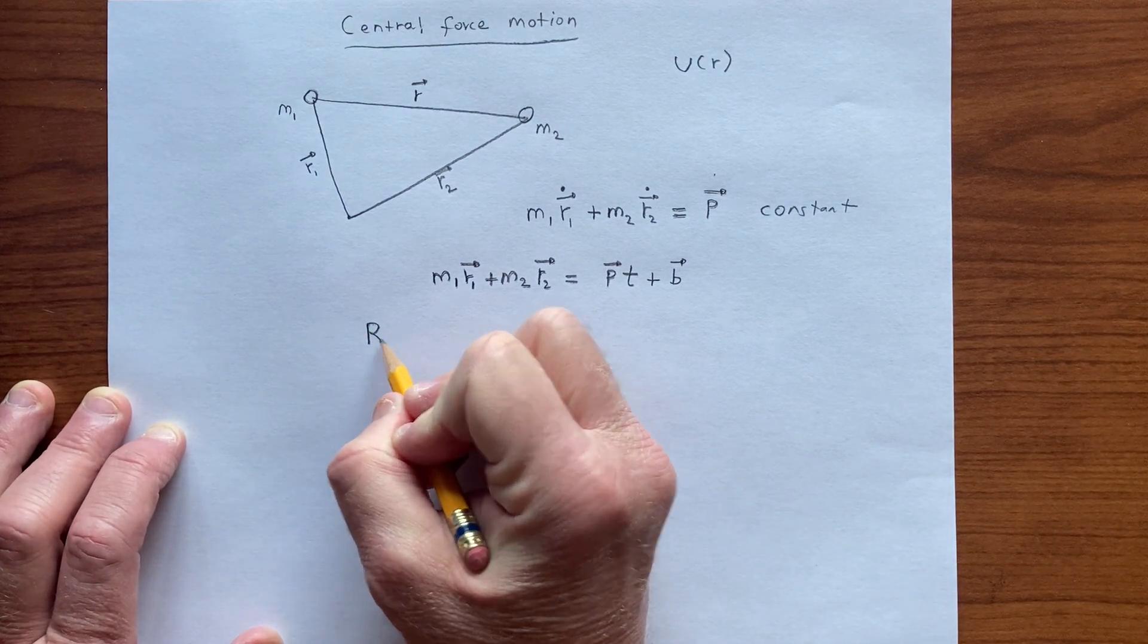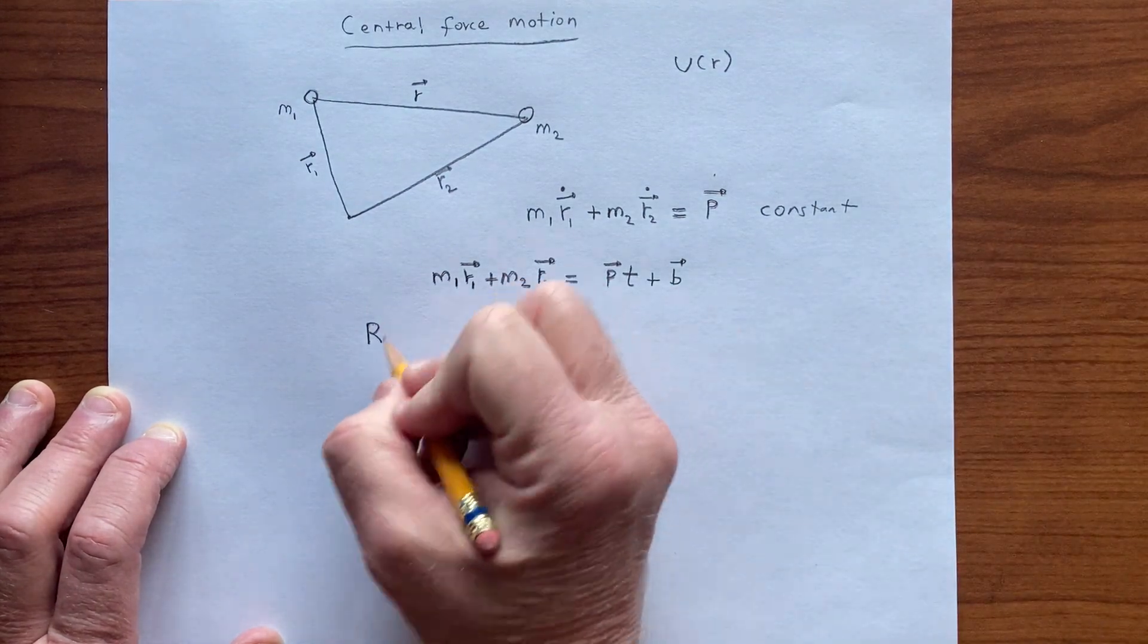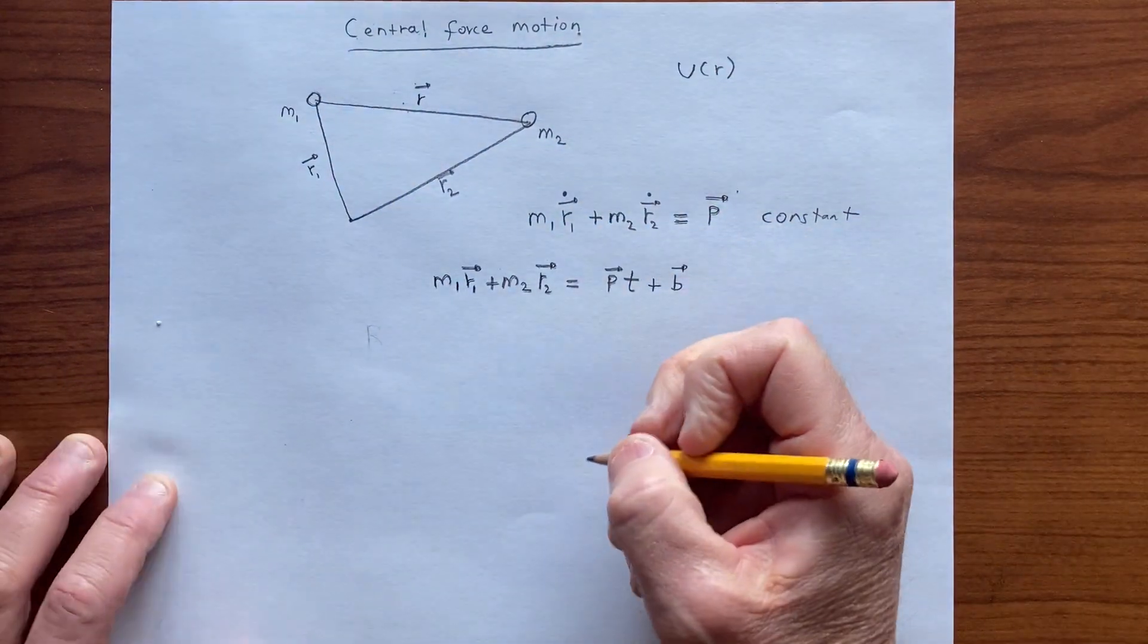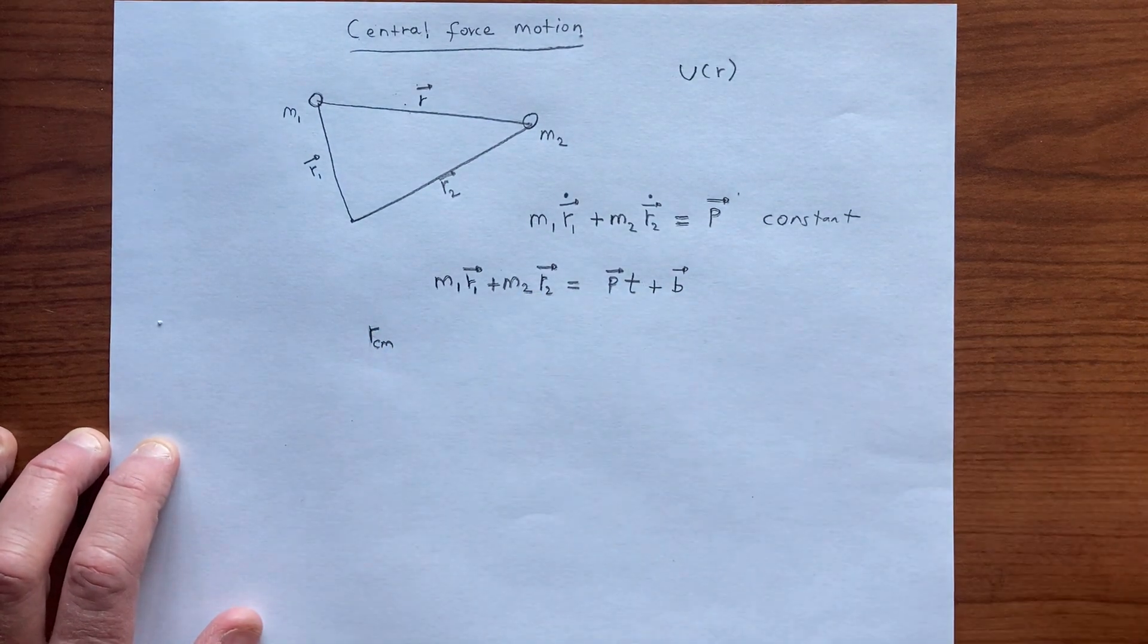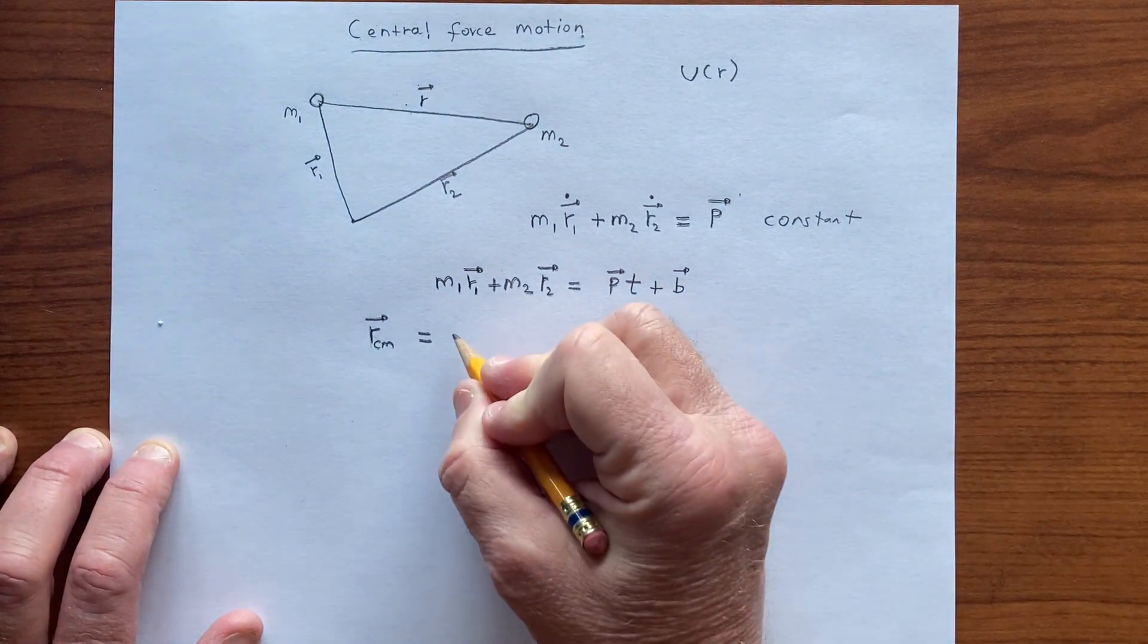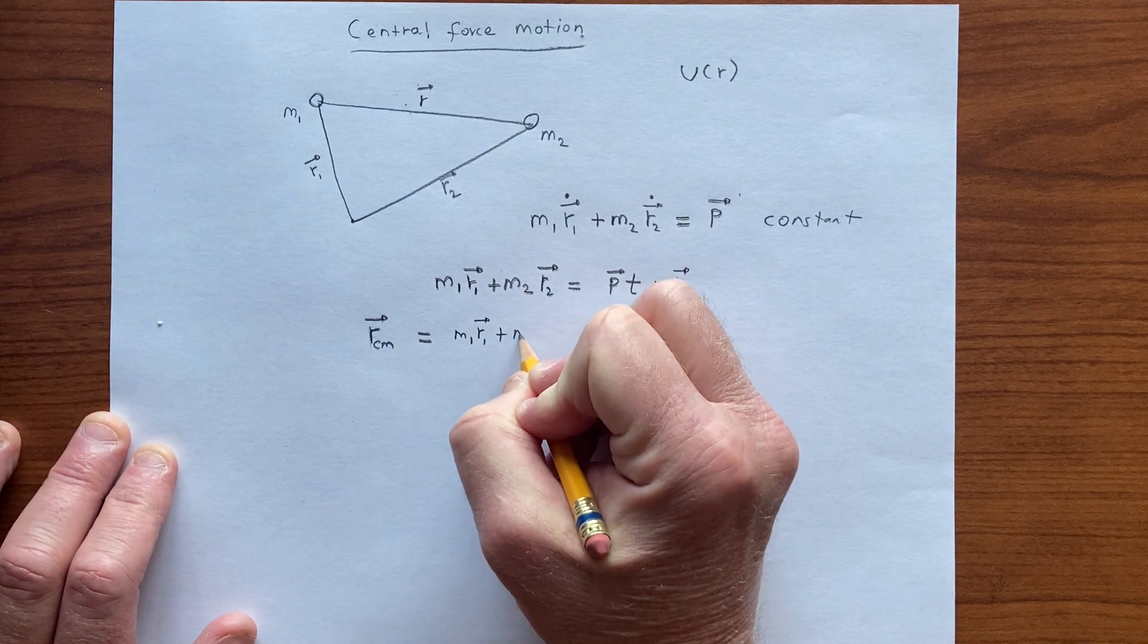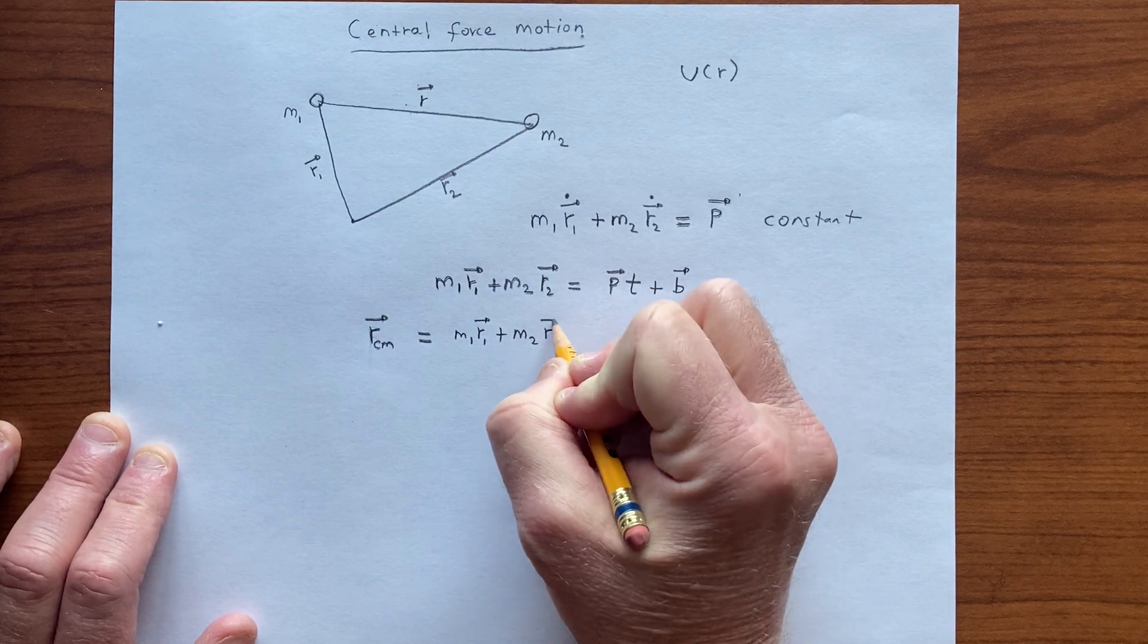Now we know that the center of mass, I don't know why I wrote capital R, but let's just label r center of mass. r center of mass is equal to the weighted sum of m times r, so it looks like m1 r1 plus m2 r2